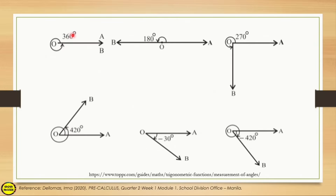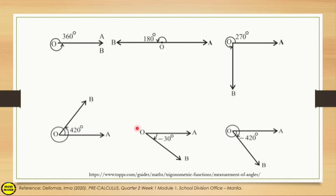For example, one complete rotation is equal to 360 degrees since the rotation is counterclockwise. Starting from the initial side and ending back at the initial side means it completed one full rotation, so that is 360 degrees. Similarly, a half rotation going to the negative x-axis is 180 degrees, and a quarter rotation to the negative y-axis is 270 degrees — all positive since the rotation is counterclockwise.